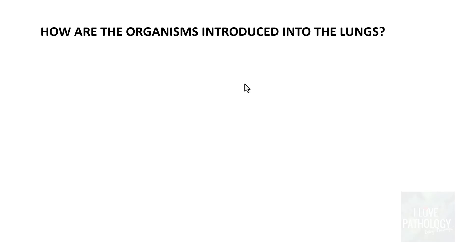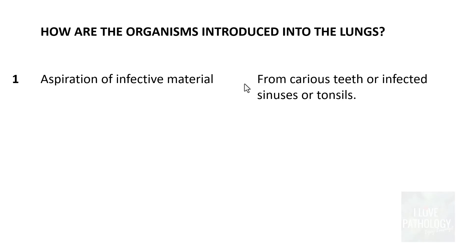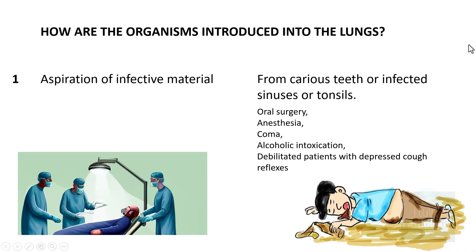The first and foremost route is aspiration of infective material, usually from caries teeth, infected sinuses, or tonsils. For example, whenever there is oral surgery, when the patient is being anesthetized, is in a coma, or has alcoholic intoxication — debilitated patients with depressed cough reflexes — all these patients have increased probability of aspiration of infective material from infected sinuses, tonsils, or caries teeth.